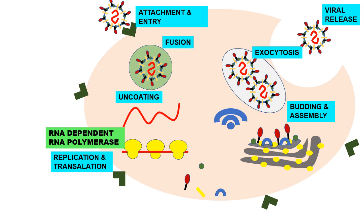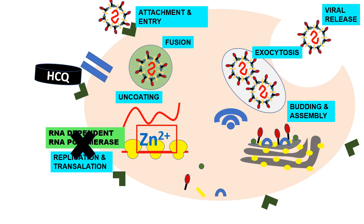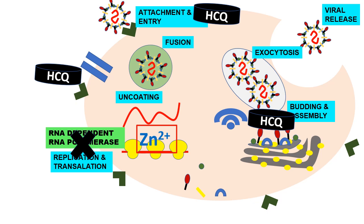The main antiviral property of HCQ is proposed to be its role as a zinc ionophore — it opens the zinc channel, allowing zinc from outside the cell to enter. Zinc then inhibits the RNA-dependent RNA polymerase, thereby preventing replication and translation of viral components. This is considered the major proposed mechanism of action against SARS-CoV-2. Additionally, HCQ prevents budding and assembly in the endoplasmic reticulum by increasing intracellular pH, and prevents attachment and entry of SARS-CoV-2 into the cell. It also has some immunomodulatory action.